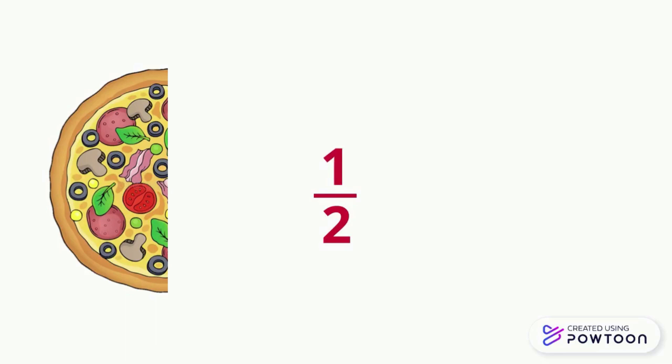This way of writing is called a fraction. We took one part out of two, so it's 1 over 2, we read it one half.